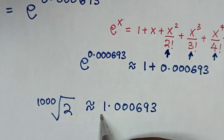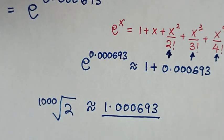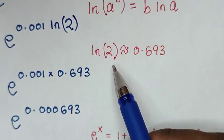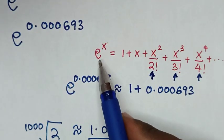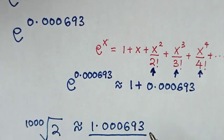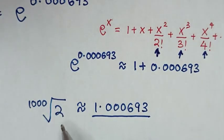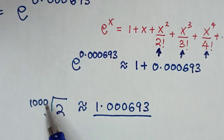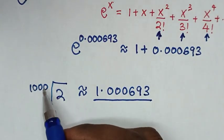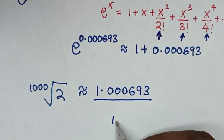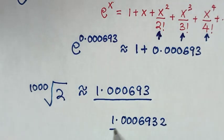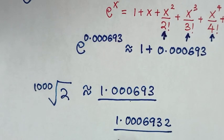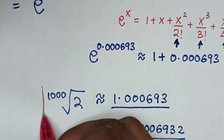This is our final answer without using a calculator. The only things we need to remember are that ln 2 is 0.693 and the Taylor expansion we applied. If we want to check whether the answer is correct, we can check using a calculator — but our problem asks us not to use one. The 1000th root of 2 is 1.000693, and we can see this answer matches.